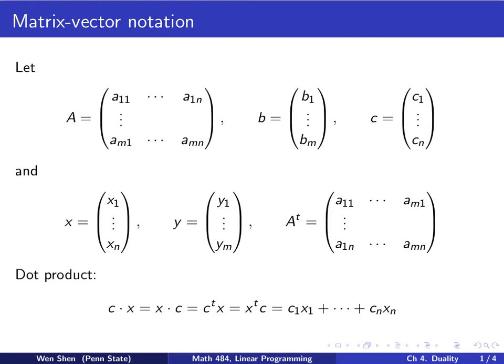We also introduce the dot product, which we are familiar with from calculus. So c dot x is the same as x dot c, which is c transpose times x, also is x transpose times c, which is basically c_1 times x_1, add c_2 x_2, add all the way to c_n x_n. And then you can also define the dot product between y and b, as long as they have the same number of elements.